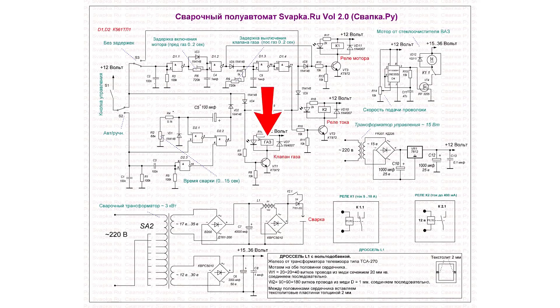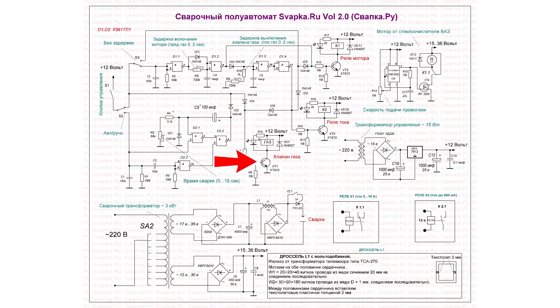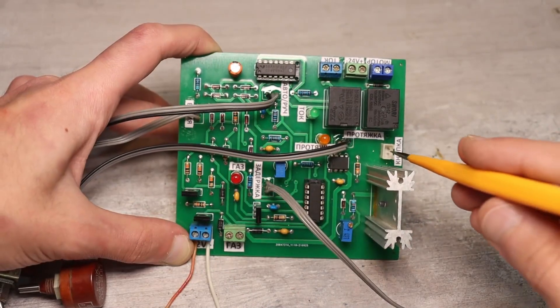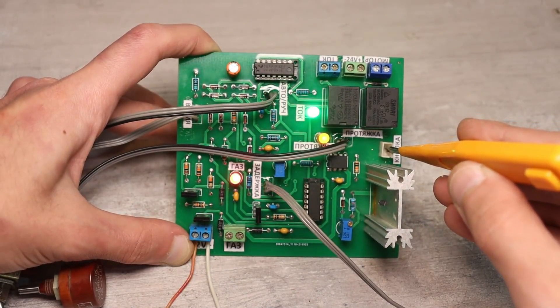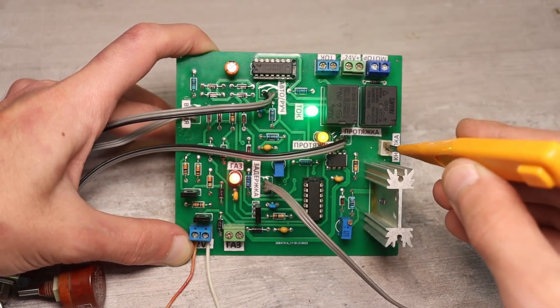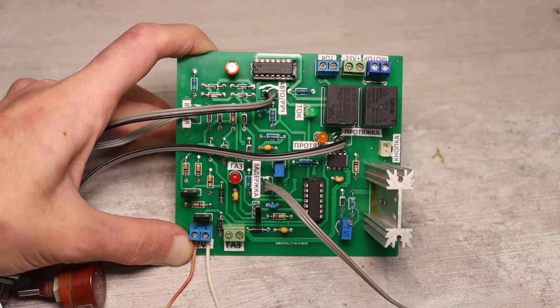The other relay is responsible for starting or breaking the feed motor. The gas valve control is organized through a medium power composite transistor. There is an option to start the gas flow a couple of seconds before and after welding, so to speak, for purging. Moreover, the delay times are adjustable.